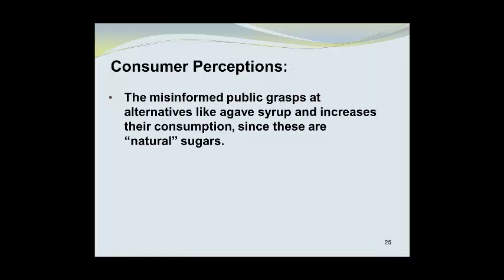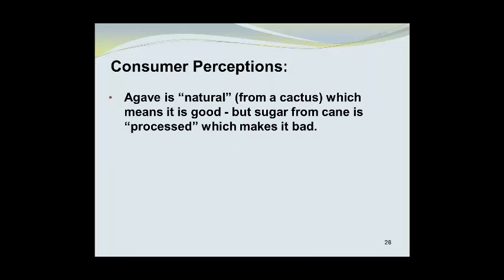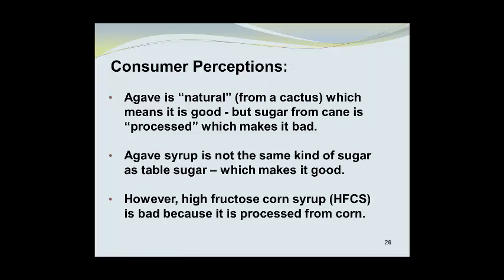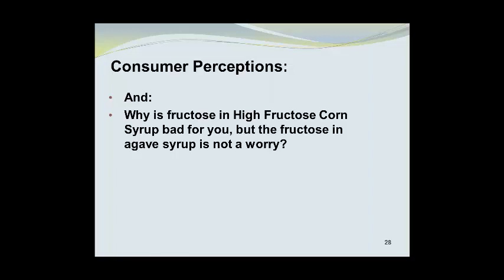The misinformed public grasps at alternatives like agave syrup and actually increases their consumption since these are considered natural sugars. Agave syrup contains about 76% sugar, of which 90% is fructose and 10% is glucose. One common view is that agave is natural — it comes from a cactus — which makes it good, but sugar from cane is processed, which makes it bad. Agave syrup is not the same kind of sugar as table sugar, which makes it good. However, high fructose corn syrup, HFCS, which is often used in beverage products, is considered bad because it is processed from corn. My question is: how did agave syrup get into the bottle and to the consumer without being processed? And why is fructose in high fructose corn syrup bad for you, but the fructose in agave syrup is not a worry?